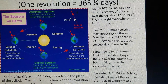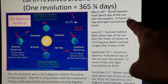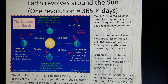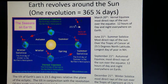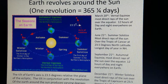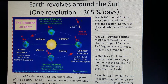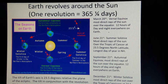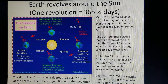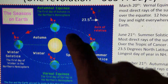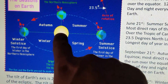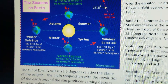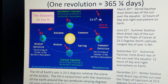So some key dates: March 20th is the vernal equinox — the first day of spring in the Northern Hemisphere, and the first day of fall in the Southern Hemisphere. The most direct rays of the Sun are over the equator, and there are 12 hours of daylight and night everywhere on Earth. For the autumnal equinox as well, the Sun shines most directly over the equator, giving us 12 hours of day and night everywhere.